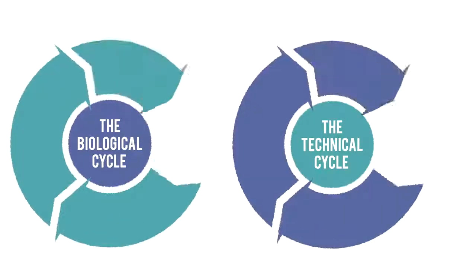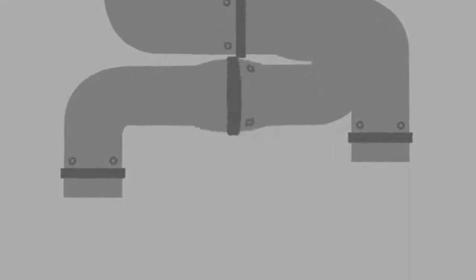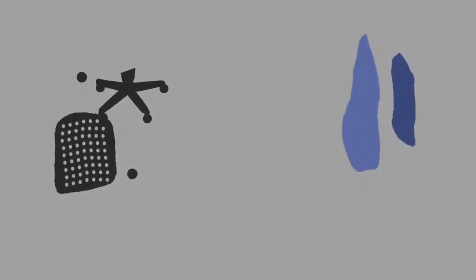Now, let's put these two cycles together. Imagine if we could design products to come back to their makers, their technical materials being reused and their biological parts increasing agricultural value.